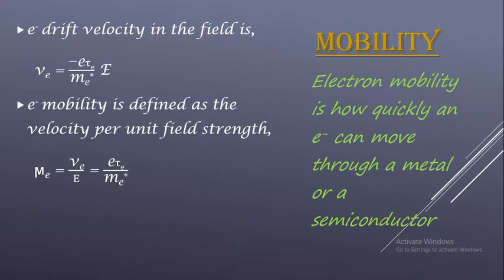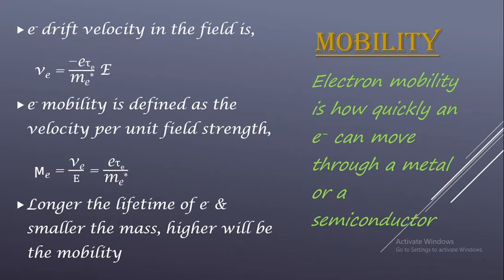We already have the value of Ve (electron drift velocity). When we substitute, E cancels with the E in the drift velocity equation and we get the electron mobility equation: mu_e = e·τe / me*. So mobility is a measure of the rapidity or swiftness of the motion of the electron in the field. We can observe that mu_e depends on the lifetime of the electron τe and also the effective mass of the electron me*.